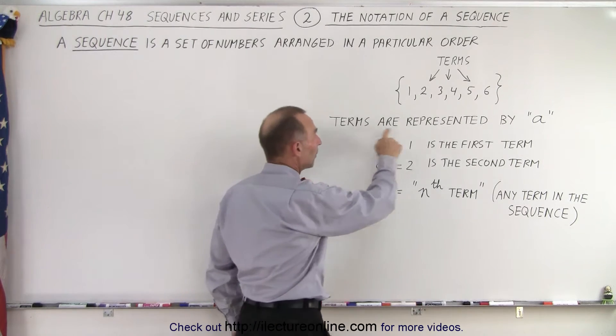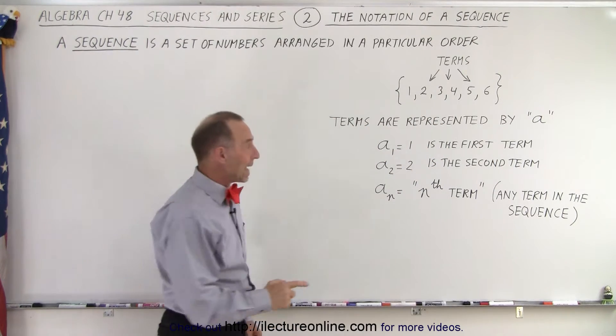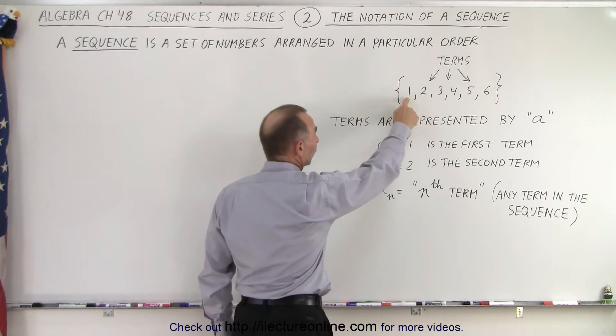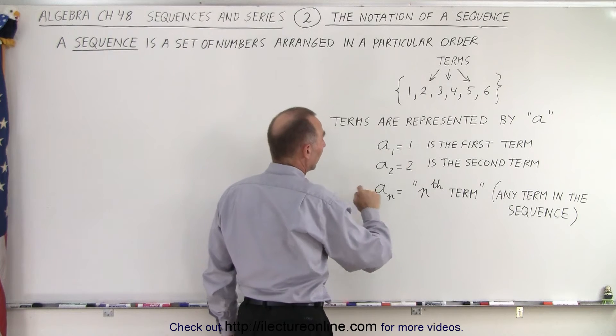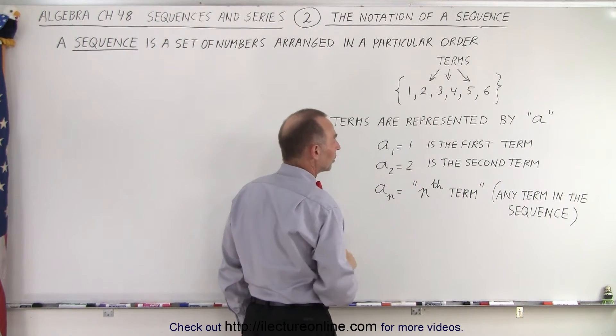The terms are represented in general by the letter A. So A sub 1 represents the first term, in this case that's equal to 1, and A sub 2 represents the second term, which in this case is equal to 2.